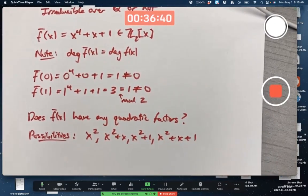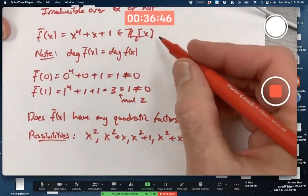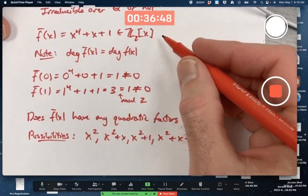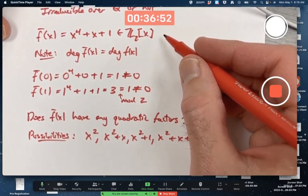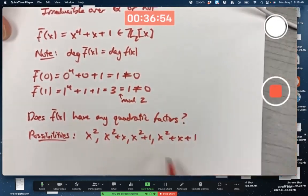Those are the only possibilities because those are the only quadratics in Z_2[x]. There's only four of them. Z_2[x] has infinitely many elements, but for each given degree, like degree 2, there's only finitely many.